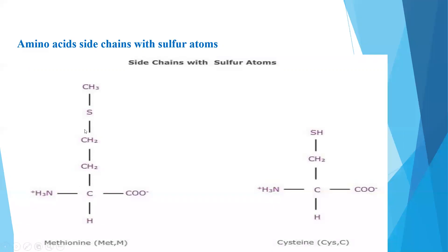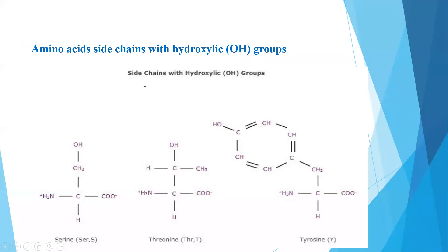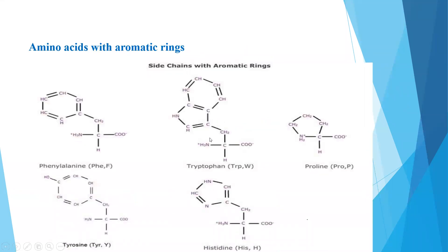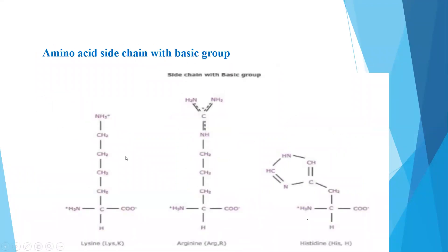The next group is amino acids with sulfur atoms in their side chains. Under that group come methionine, which contains sulfur, and cysteine, which also contains a sulfhydryl group. The next group is amino acids containing hydroxyl groups — serine, threonine, and tyrosine all contain hydroxyl (OH) groups. The next group is amino acids with aromatic rings, including phenylalanine and tryptophan.